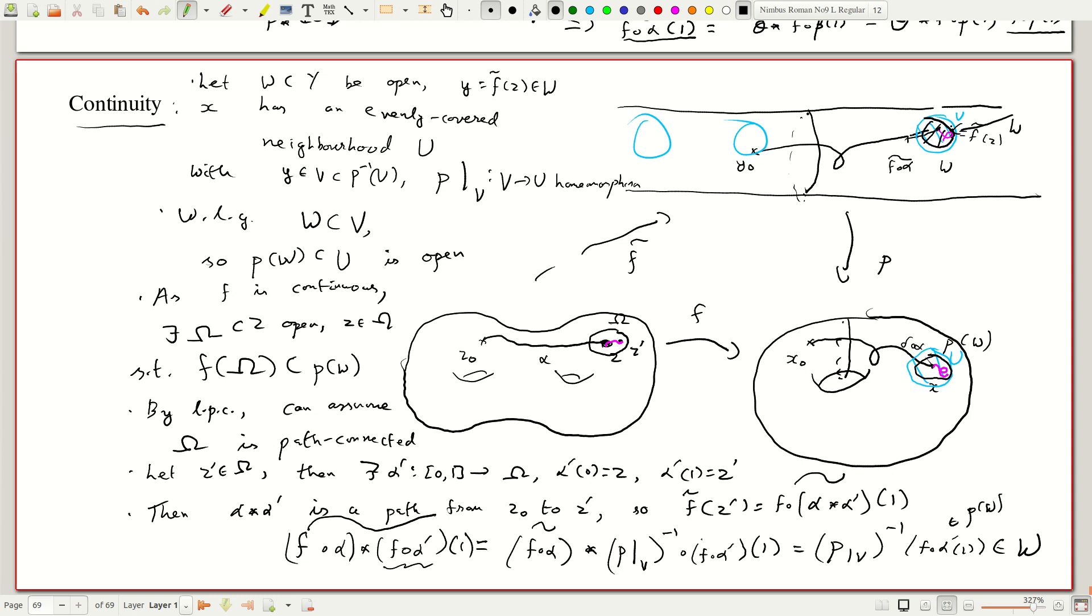And so we have full control over the end point. In particular we can ensure the end point is arbitrarily close to z. So this is the idea of the continuity.